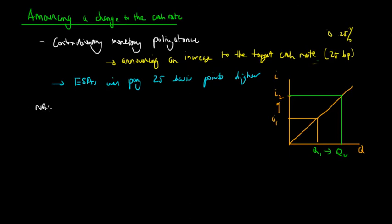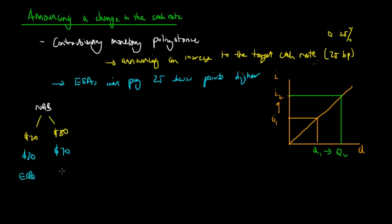Let's assume NAB has $100 to lend. It needs to keep $20 in their ESA accounts to maintain liquidity for the next financial day, leaving $80 to lend in the overnight money market. But now, given that ESAs will pay a higher 25 basis points than before, NAB has an incentive to deposit a greater amount in their ESAs. This means they have less to lend in the overnight money market — their deposits have increased from $20 to $30, so their money to lend has decreased from $80 to $70.